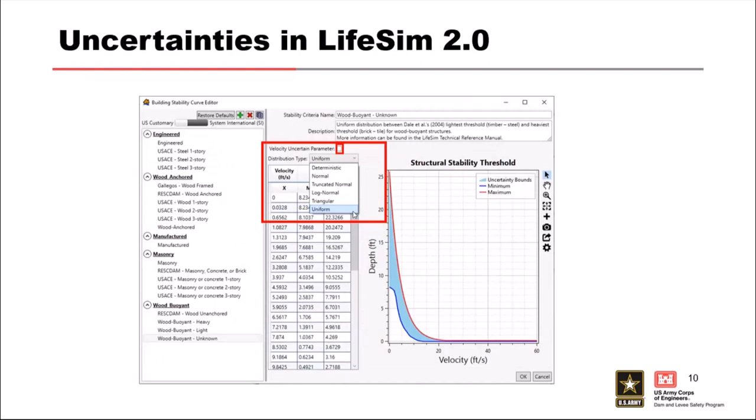For the stability function, you can set up uncertainty around how you sample the curve — a uniform distribution gives equal weight to each part of the curve, or you can use a triangular distribution with a most likely value. If you're uncertain whether to use a wood frame or masonry curve, there's no built-in barrier to mix them. You could run a sensitivity scenario or set up a combined curve, taking the min from one and the max from the other and averaging the most likely.